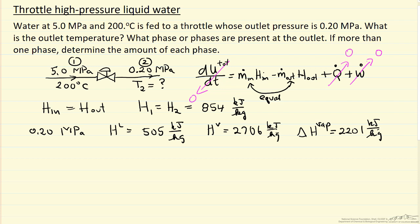So notice enthalpy to the outlet enthalpy is between the liquid and the vapor so we can calculate how much liquid and how much vapor. H2 which is 854 kilojoules per kilogram is equal if x is the fraction of vapor 1 minus x is the fraction of liquid times the enthalpy of the liquid and x times the enthalpy of the vapor. The other way we can write this is enthalpy of the liquid plus x times delta H of vaporization.